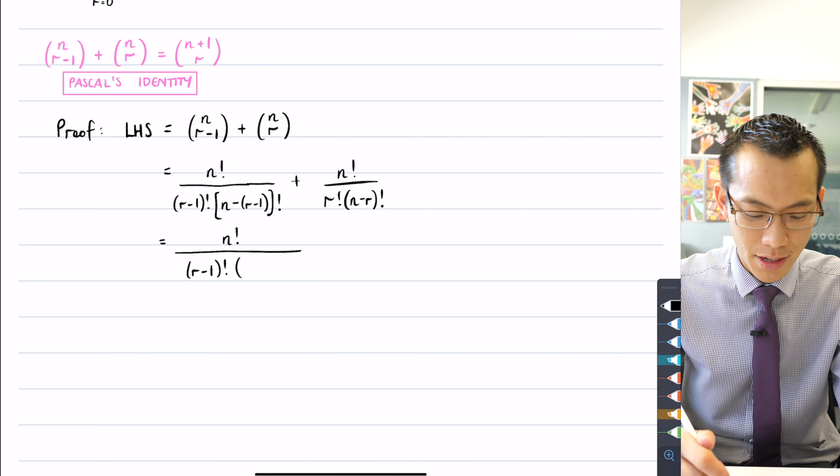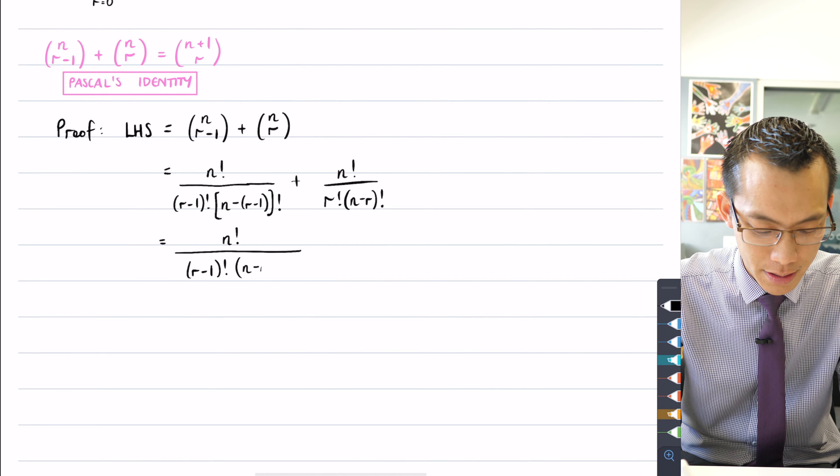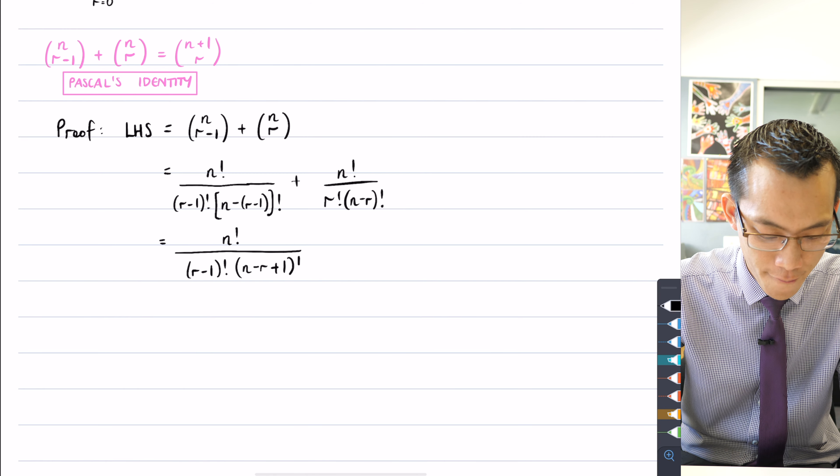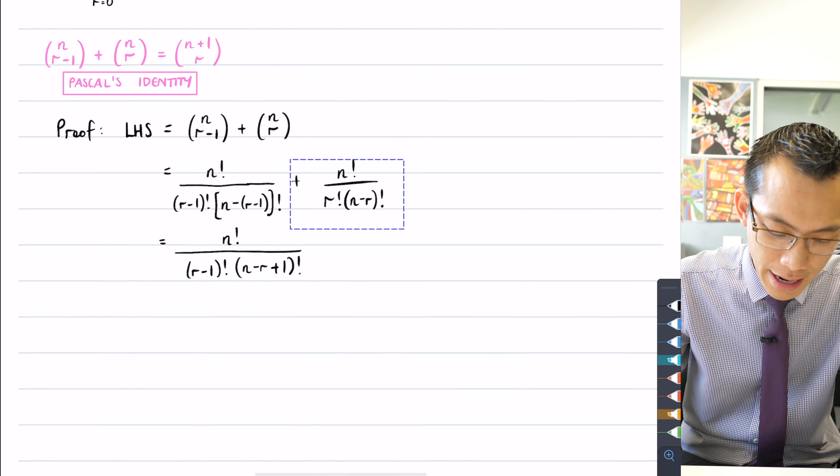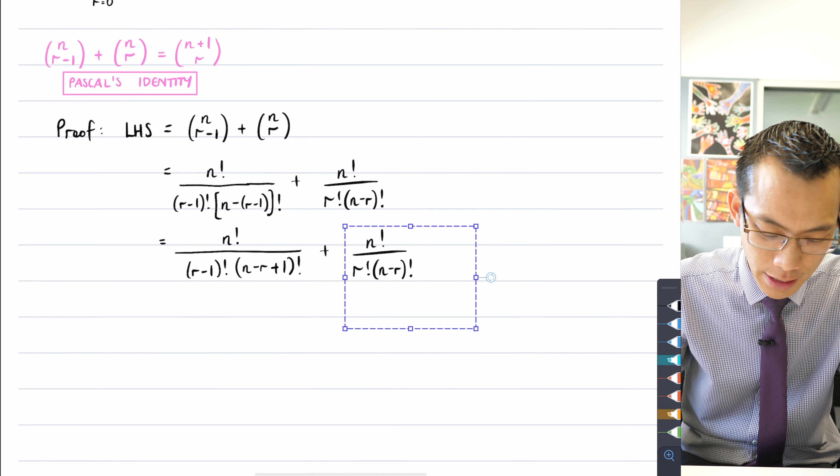I'm going to have my r minus one factorial. And then n minus r plus one is what happens when I distribute that minus to the brackets. So I get n minus r plus one factorial. And then I haven't yet done anything to this fraction over here.